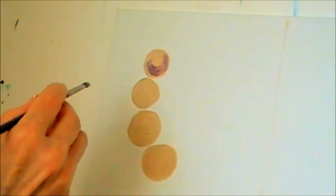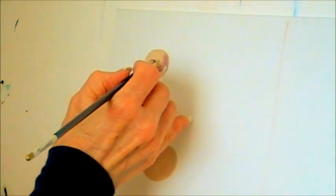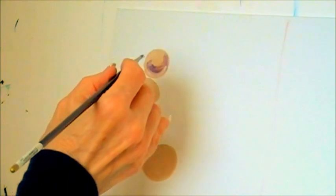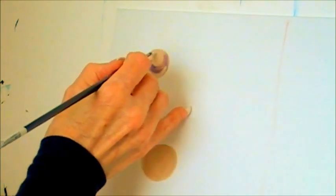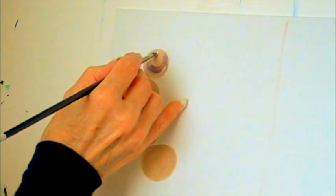Then I am using white. I am making a little bit of reflection right there. And I am going to put highlight, not in the center of the bowl, where the light source is coming. So let's put it on the top like that.